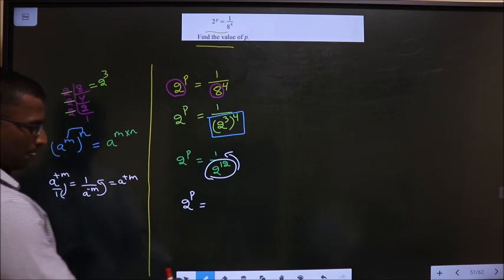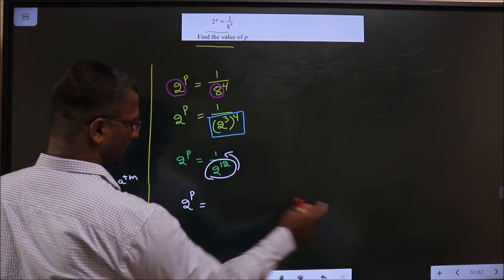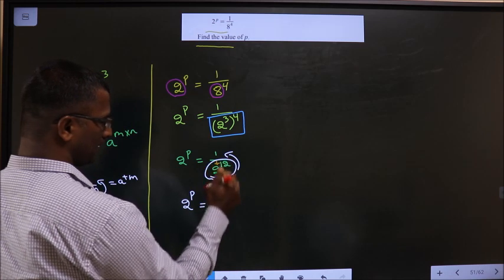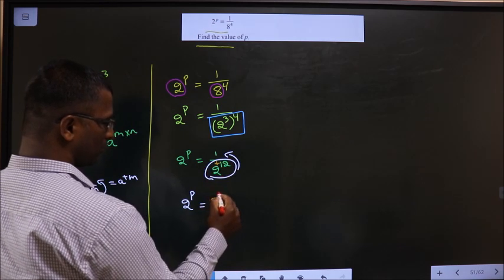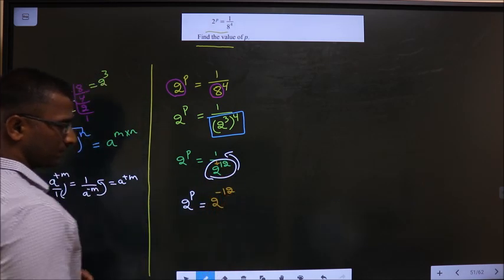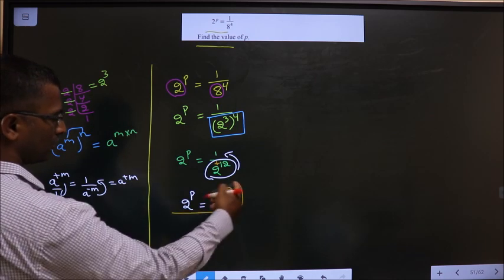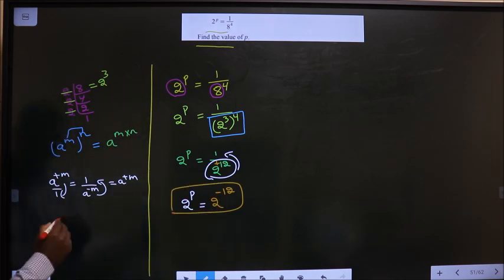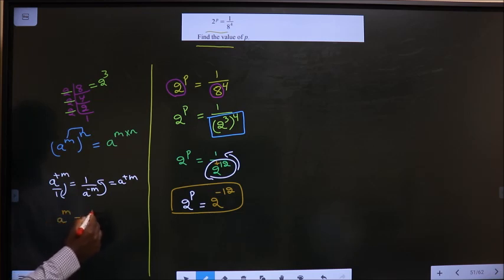Do the same thing here. Here it is 2 power plus 12. When it comes up, 2 power minus 12. Now, what will you apply onto this one? Is this. A power m equal to a power n. See.